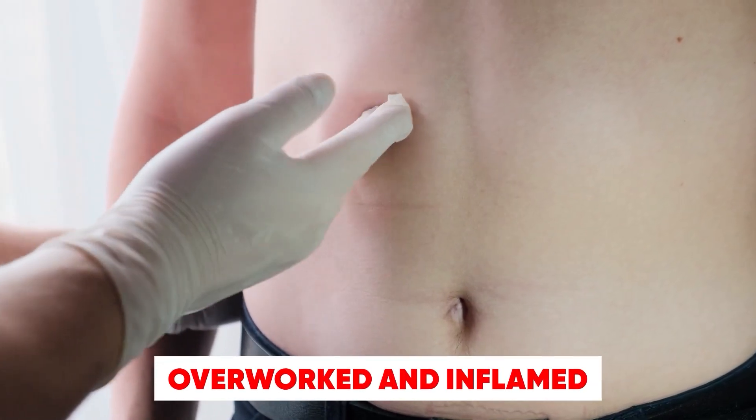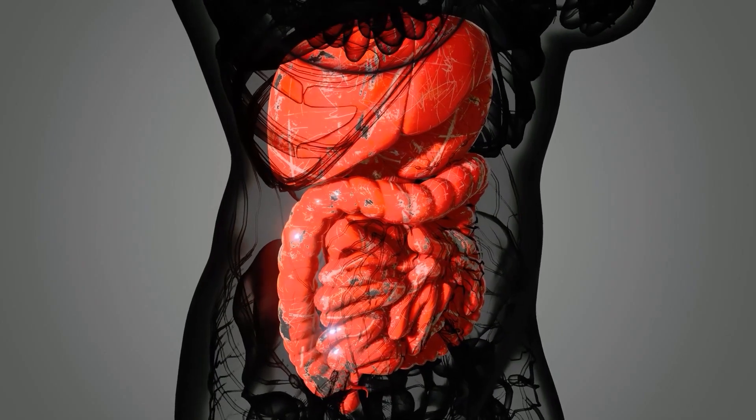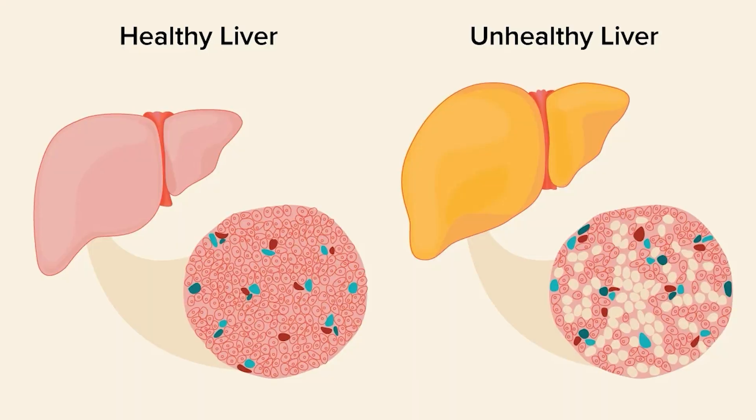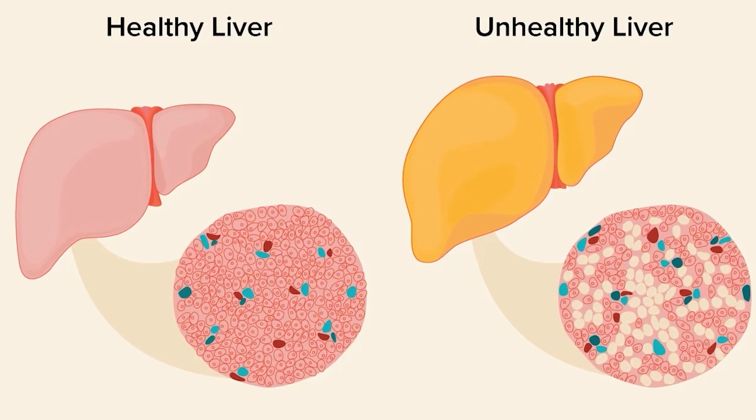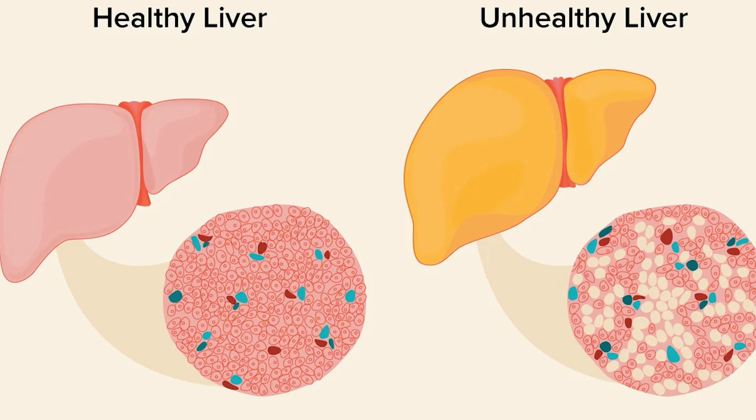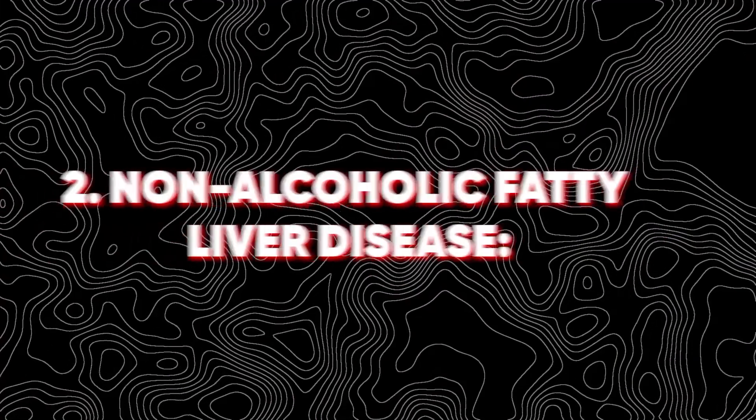But when alcohol intake becomes excessive, your liver can't keep up. It becomes overworked and inflamed. And over time, it loses its ability to properly process fats. This leads to a buildup of fat in the liver, resulting in alcoholic fatty liver disease.